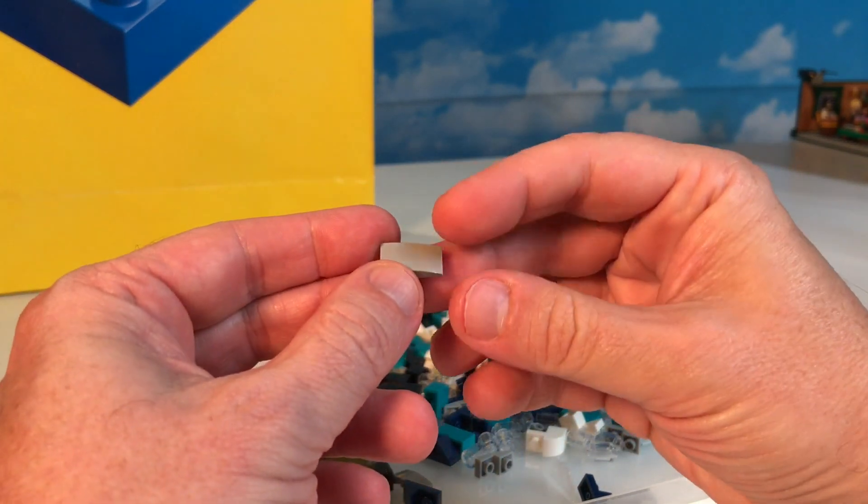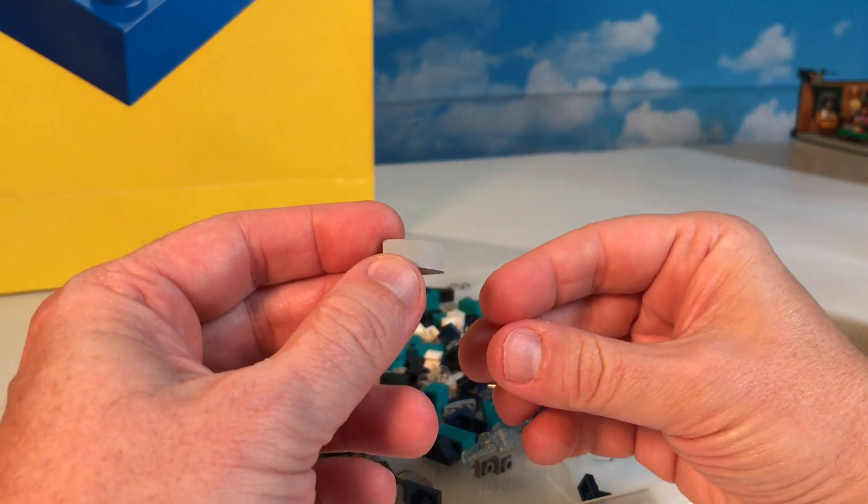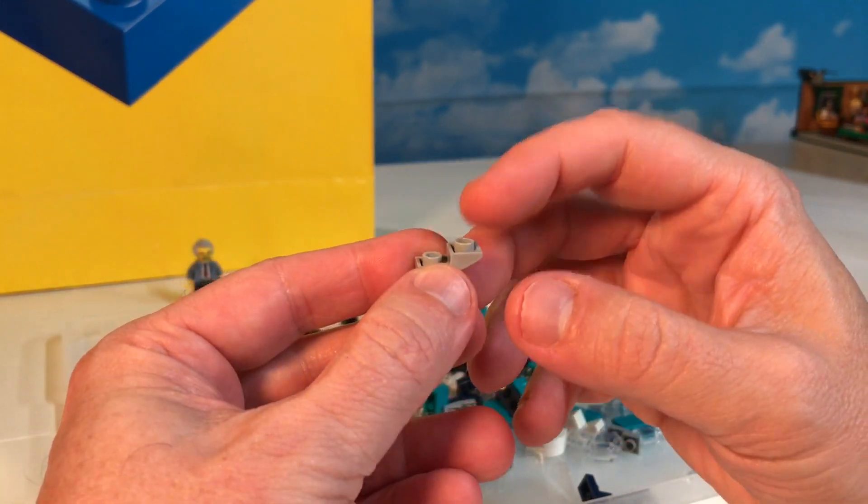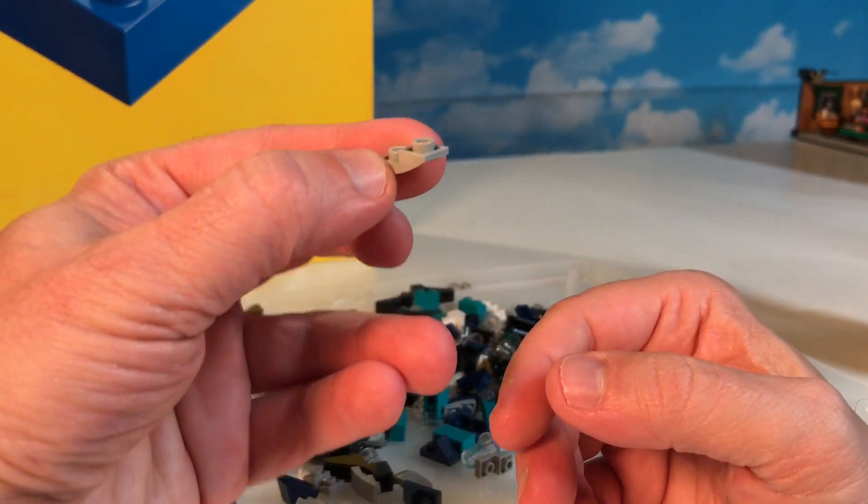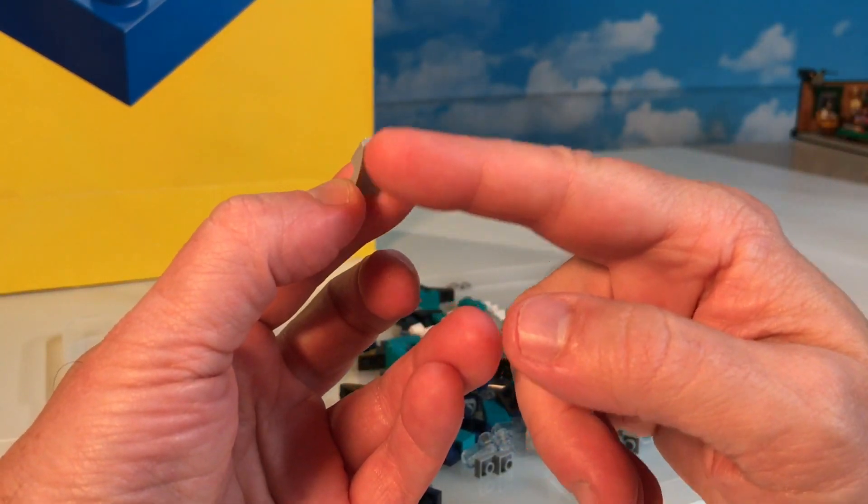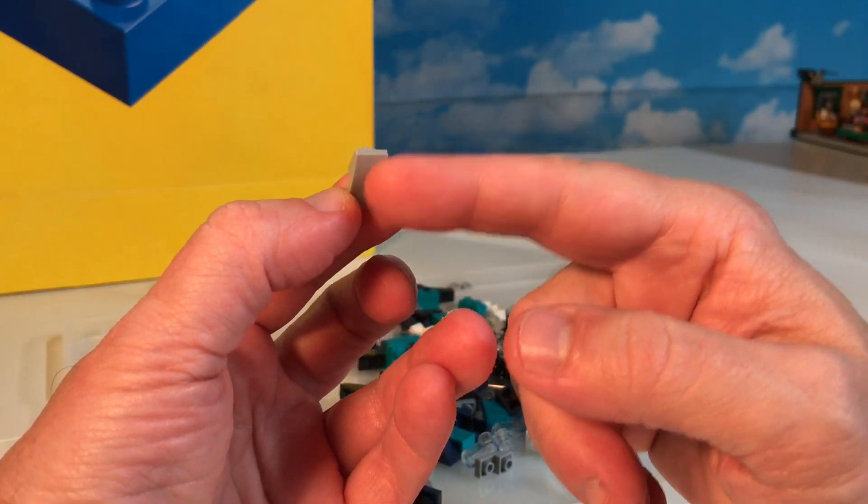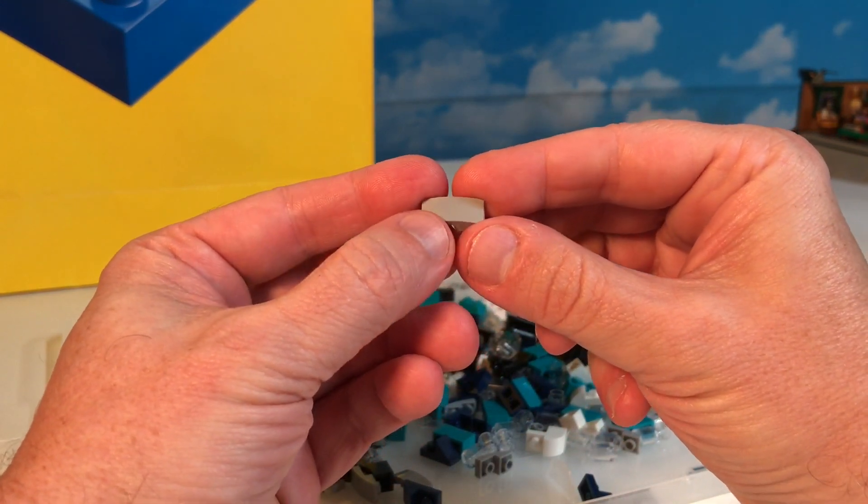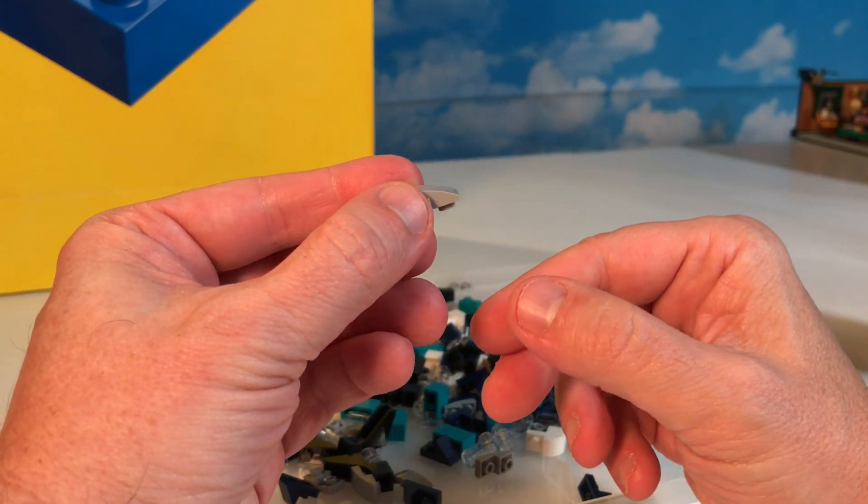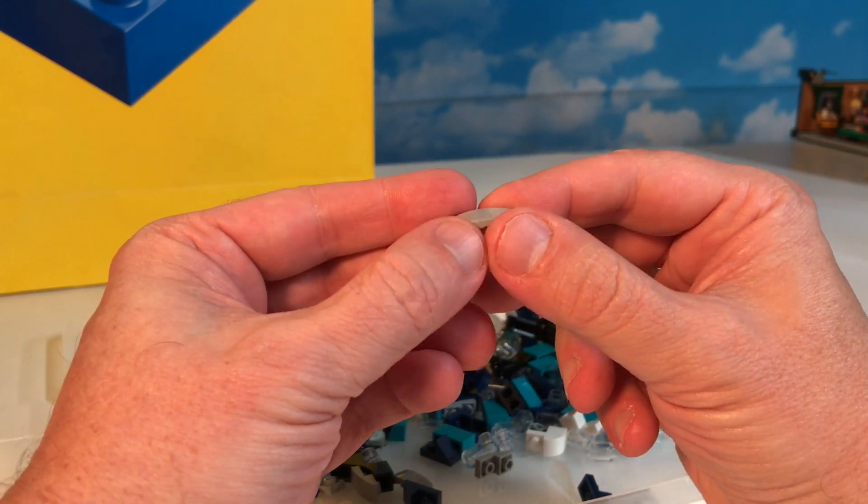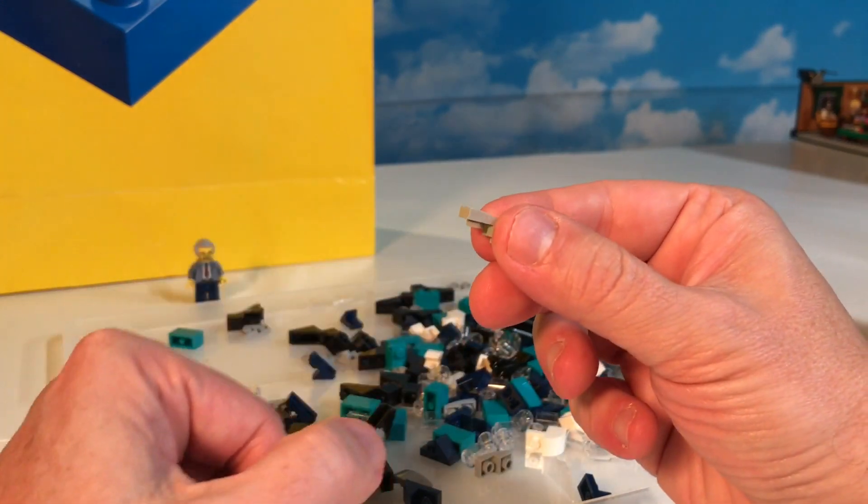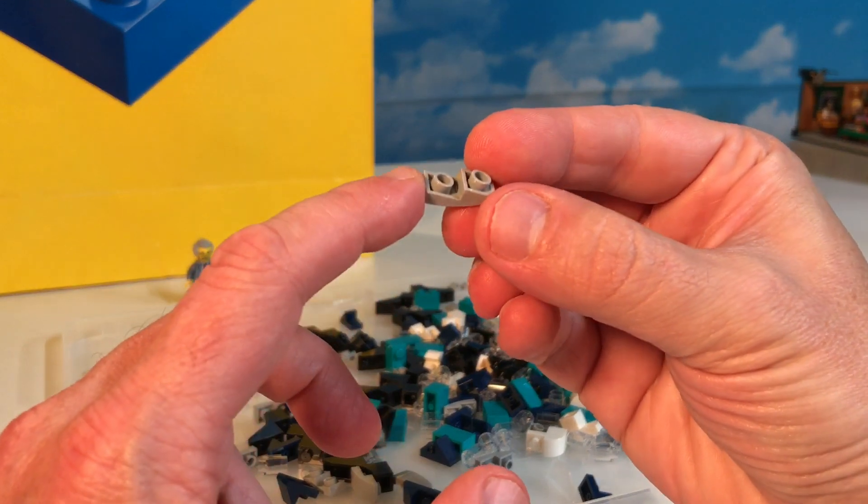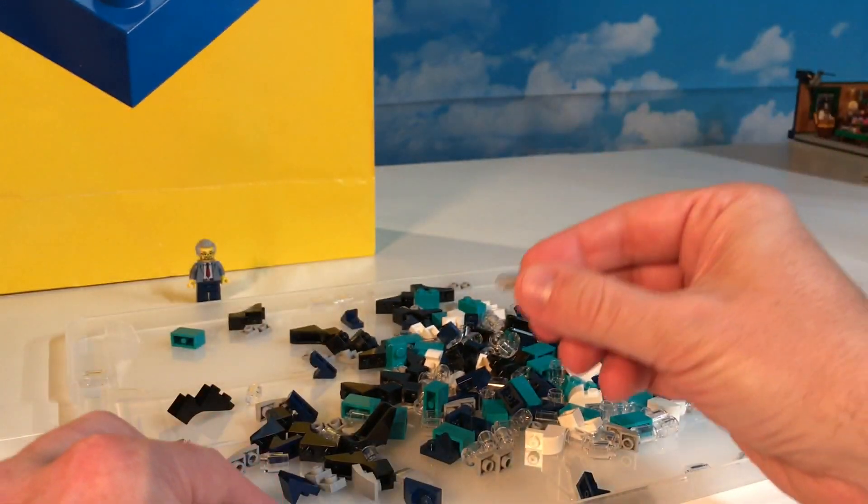I got these wonderful curved pieces, but if you notice, these curved pieces are a little bit different because these have studs on this side. So these actually can be placed up for decorative purposes on buildings and such. I usually see a lot that have the anti-studs here, but these come with the studs on that side.